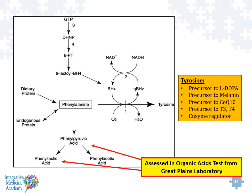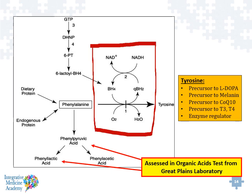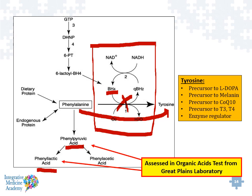A condition called phenylketonuria is where we have a blockage in our phenylalanine hydroxylase. Here our BH4 gets converted to BH2 as it acts as a cofactor for the conversion of phenylalanine to tyrosine. So tyrosine is a precursor to L-DOPA and dopamine, a precursor to melanin and skin pigment, a precursor to CoQ10 influencing mitochondrial activity, and a precursor to T3 and T4 influencing thyroid activity. On the organic acids test, there are two markers — phenyllactic acid and phenylpyruvic acid — which can indicate some type of blockage in the phenylalanine hydroxylase enzyme.